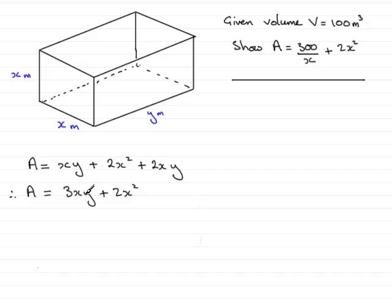Now also, you'll notice that what we've got here is a y in this equation, and there is no y in the equation that we've got to show. So how are we going to get rid of this y?